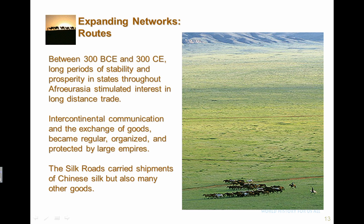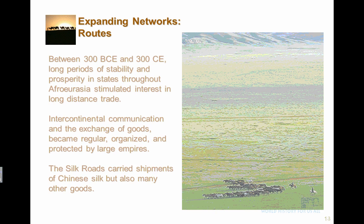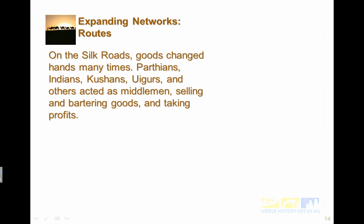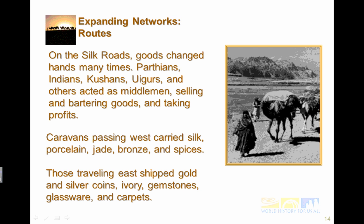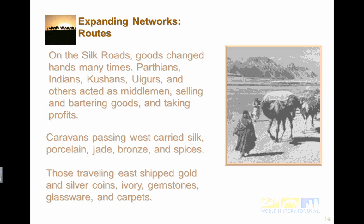The Silk Roads carried shipments of Chinese silk, but also many other goods — not just silk. Goods changed hands many times; Parthians, Indians, Cushites, and others acted as middlemen, selling and trading goods and taking profits. Caravans passing west carried silk, porcelain, jade, bronze, and spices. When they traveled east, they shipped gold and silver coins, ivory, gemstones, glassware, and carpets.